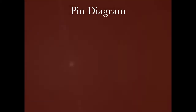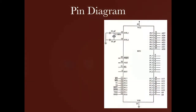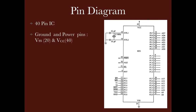Like in this figure, 8051 is a 40 pin IC. We will discuss each pin of the IC and its function. Like in each IC, this IC also has a ground and power connection. Ground connection is pin number 20 and power is pin number 40.